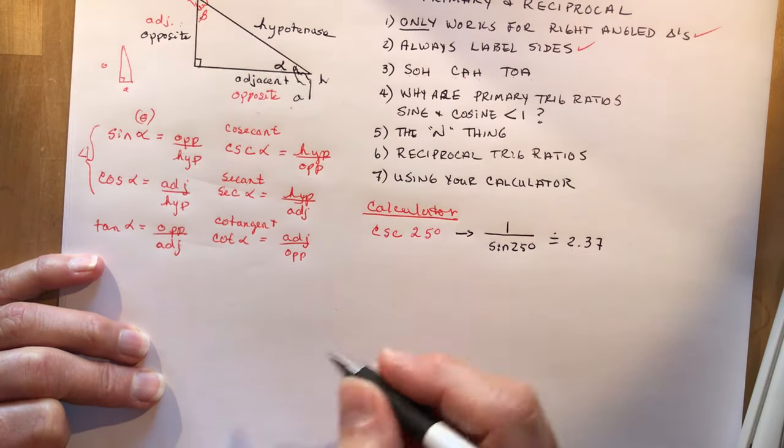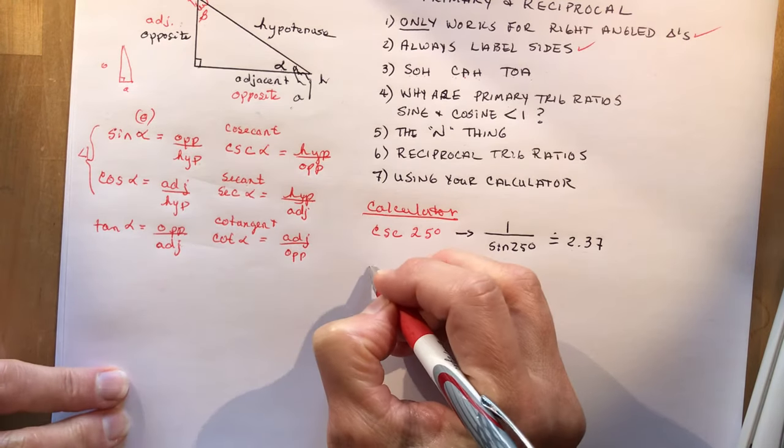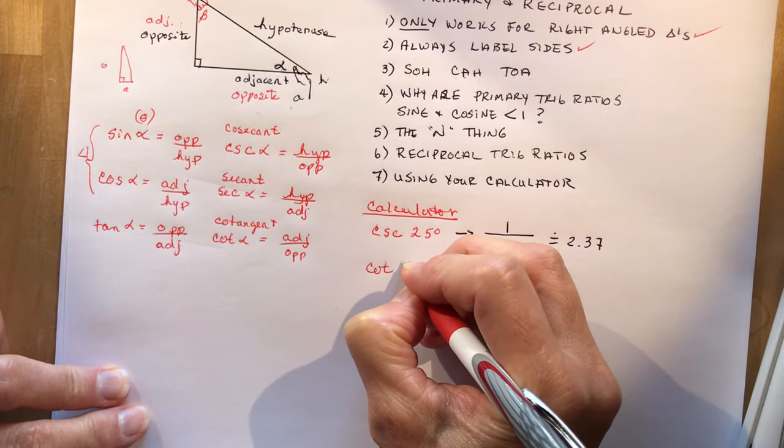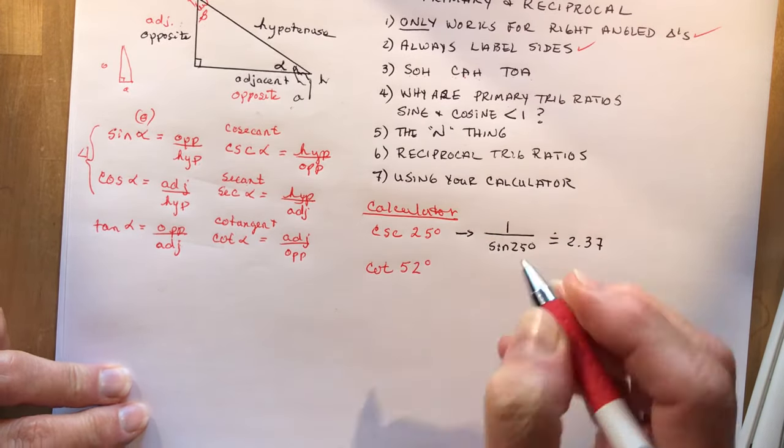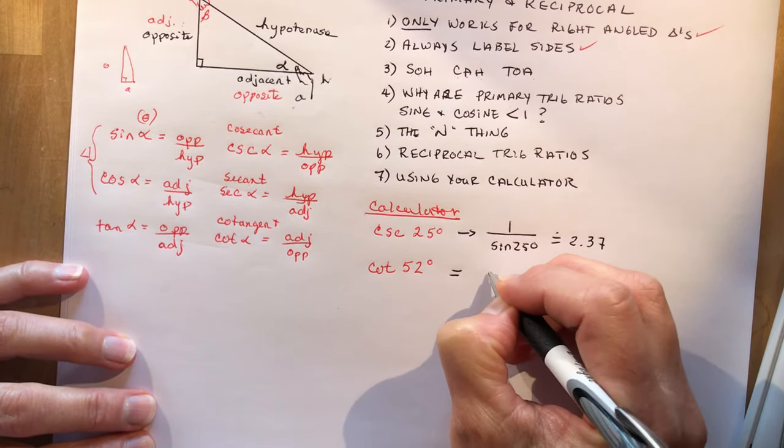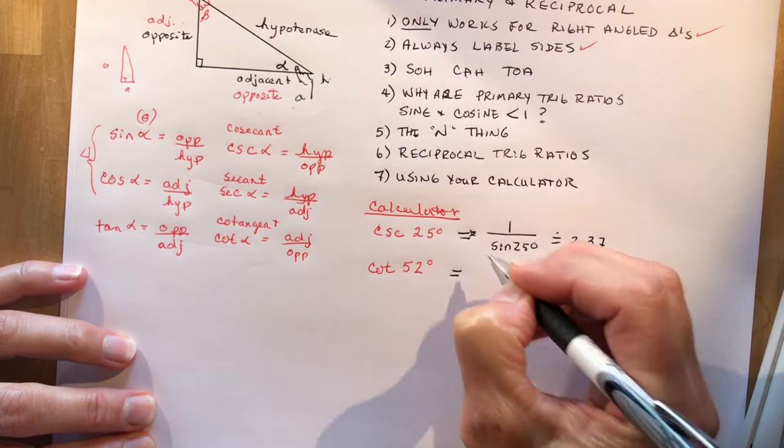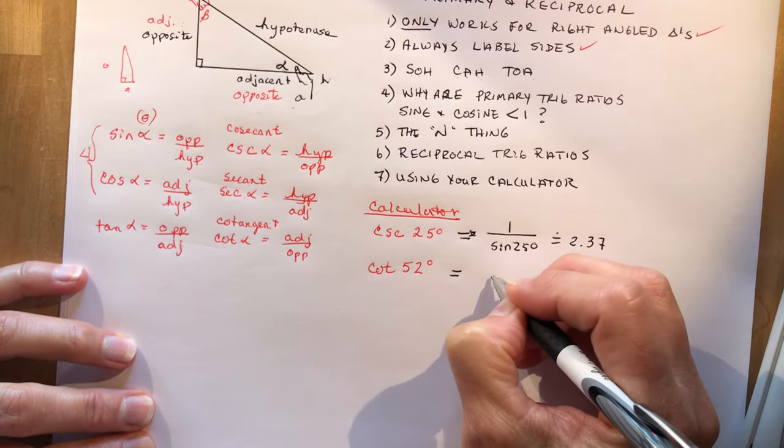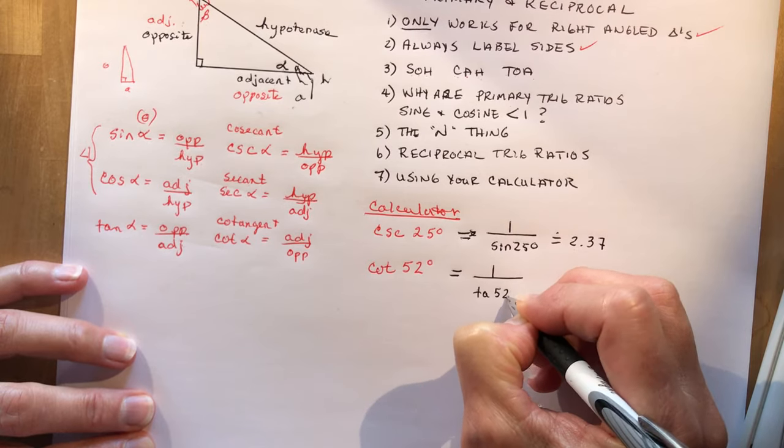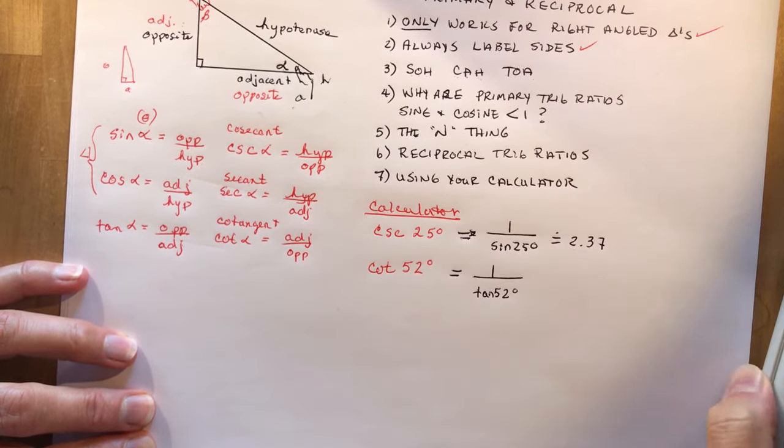So let's try, let's do the cotangent just for another example. Cotangent of 52 degrees, switch the numbers around here. So the cotangent of 52 degrees is equal to, I could have put an equal sign here, never the arrow, cotangent of 52 degrees is 1 over the tangent of 52 degrees, forgot the end. Okay.